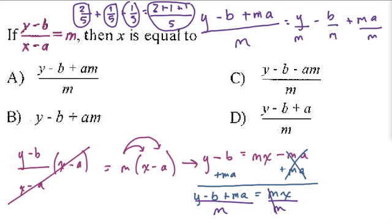So instead of y minus b plus m a, it's y over m minus b over m plus m a over m, just as it was for 2 fifths plus 1 fifth plus 1 fifth. And here, why this is helpful is because it allows us to divide or simplify this one term. m divided by m is 1. So you could rewrite this as y minus b over m plus a, and that equals x.